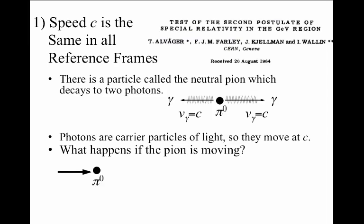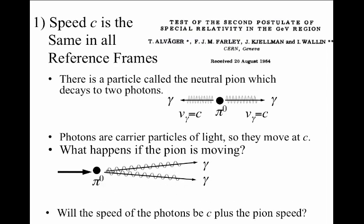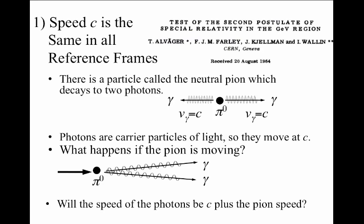But what happens if this neutral pion is itself moving? We could make a beam of neutral pions moving in the lab at some high velocity. When it decays, we can imagine that the two photons come screaming forward. But what will the speed of the two photons be if they're originally going to be at a speed of c, but now the pion is moving, would it be the case that the speed of the photon is the speed of the pion plus c?